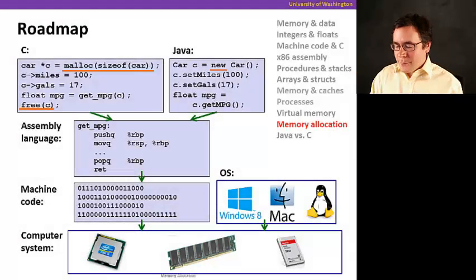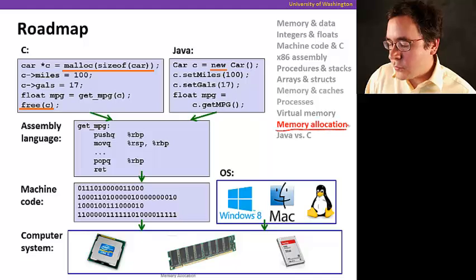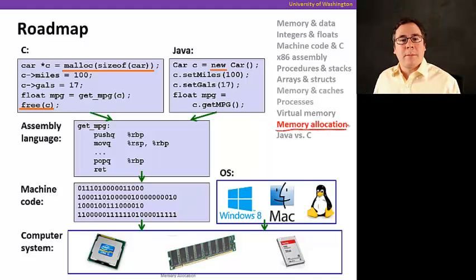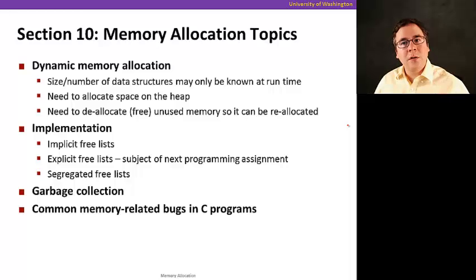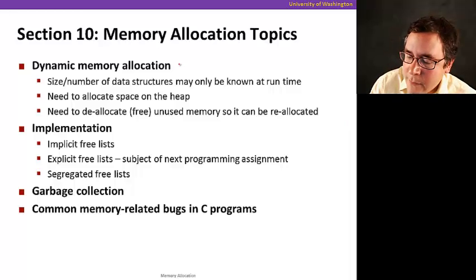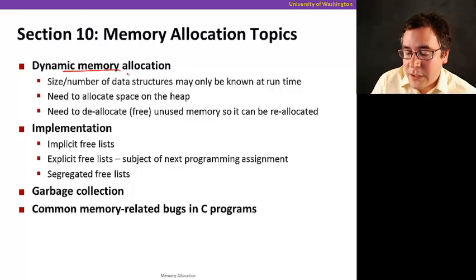We're now starting a new section. We're going to be seeing how to manage memory. How do programs allocate memory as they run so they can use it for their data structures? So this section is a little long. It has quite a few parts to it. We're going to start with a quick intro right now, and then we're going to see how dynamic memory allocation works.